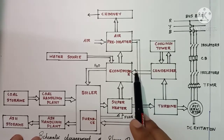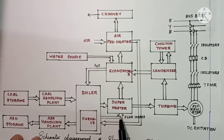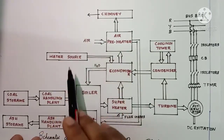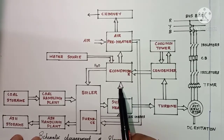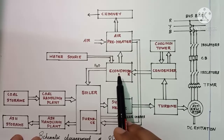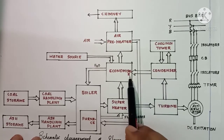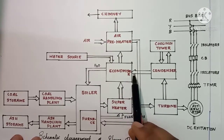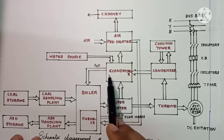The condensate — that is, the condensed water — directly enters the economizer. At the economizer, the flue gases pass through and their heat energy is absorbed. Using this heat, the condensate from the condenser gets heated at the economizer.